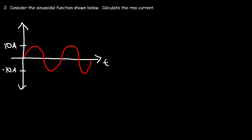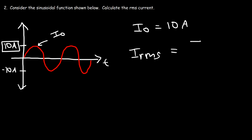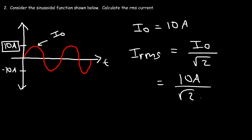Problem 2: Consider the sinusoidal function shown below. Calculate the RMS current flowing in the circuit. The peak current is the maximum current, which from the graph is 10 amps. The RMS current equals the peak current divided by the square root of 2, so it's 10 amps over the square root of 2, which equals 7.07 amps.